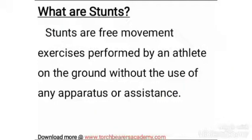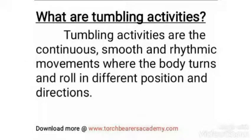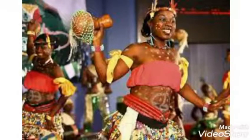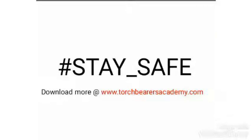In the course of today's lesson we looked at the meaning of stunts, types of stunts, the meaning of tumbling activities, and some examples of tumbling activities. In our next class we will be discussing the topic local dance. An assignment has been dropped for you in the PDF file — please ensure you do the assignments and submit. Thank you, and ensure you stay at home, wash your hands regularly, and stay safe.